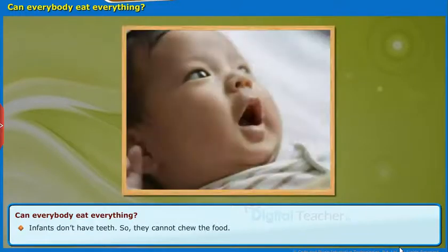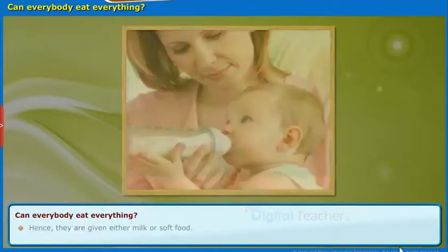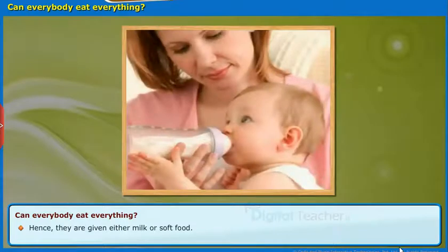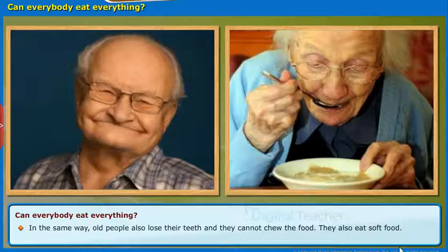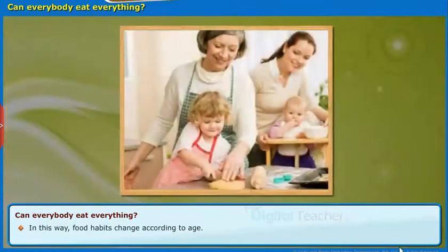Infants don't have teeth, so they cannot chew food. Hence, they are given either milk or soft food. In the same way, old people also lose their teeth and cannot chew food; they also eat soft food. In this way, food habits change according to age.